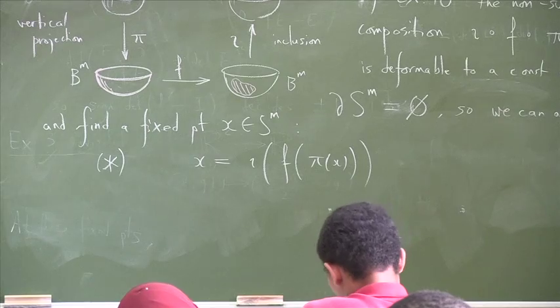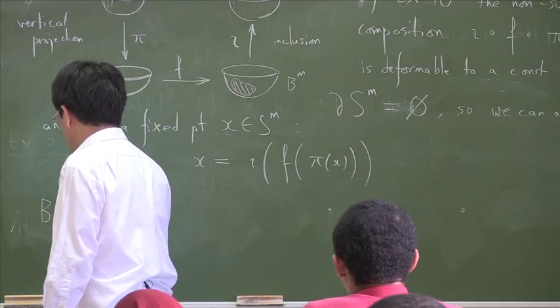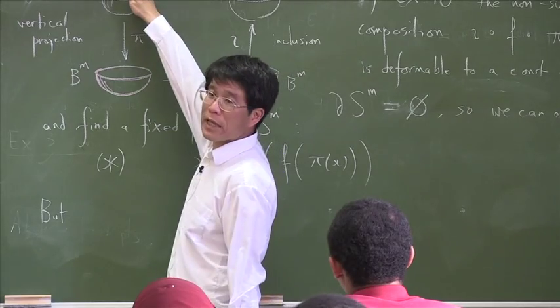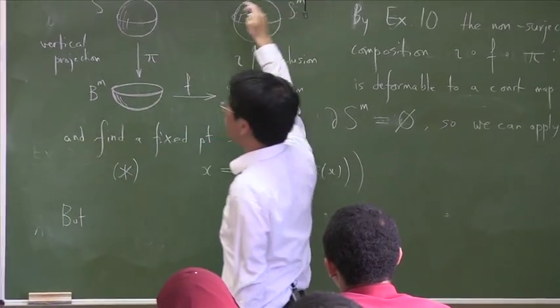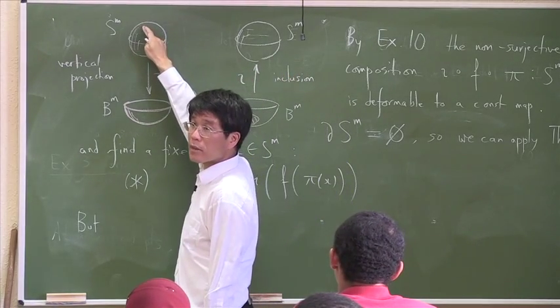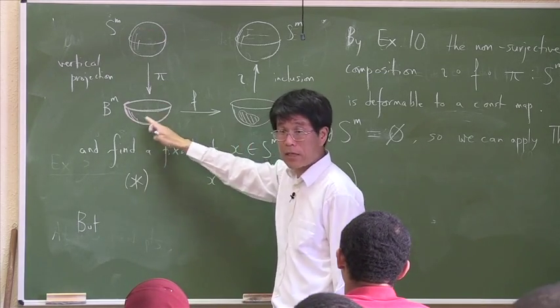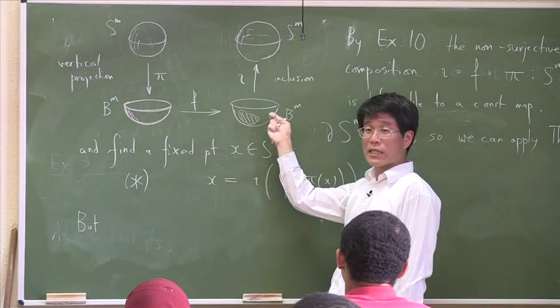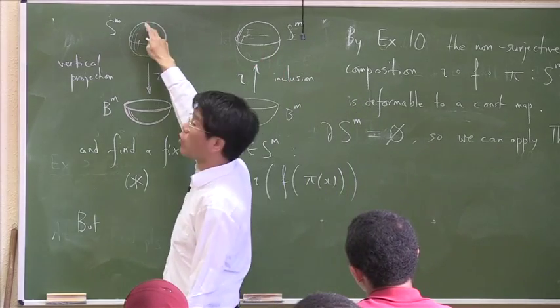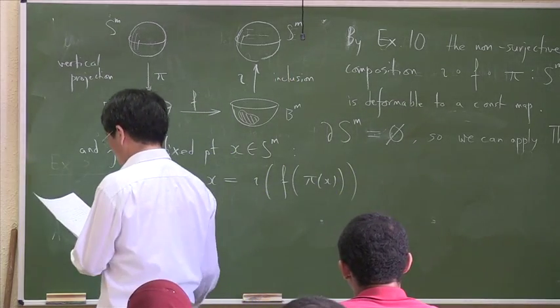The statement that X does not move under the composition of those three maps. But you see, let's discuss where this X can be. Do you think X can be on the northern hemisphere and not move after the composition of those three maps? Can X, this fixed point, be on the northern hemisphere? No, it cannot. Because after this operation, it drops down to the southern hemisphere and then it goes somewhere else on the southern hemisphere by F, and when I end up, I end up on the southern hemisphere. So every point on the northern hemisphere moves to some point on the southern hemisphere. So this X cannot be on the northern hemisphere.